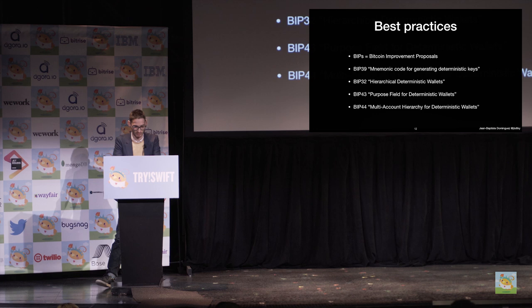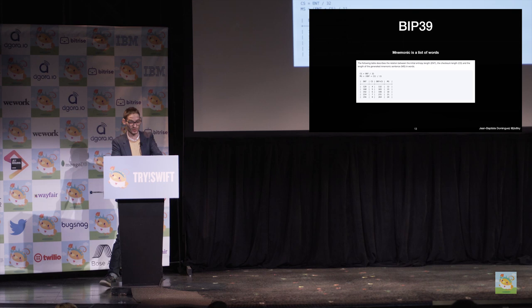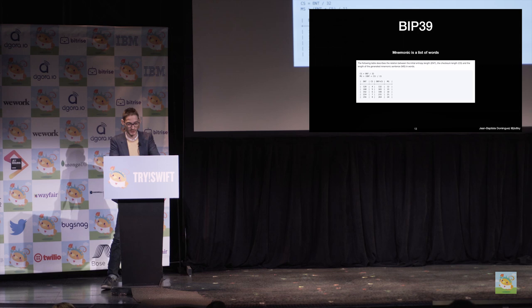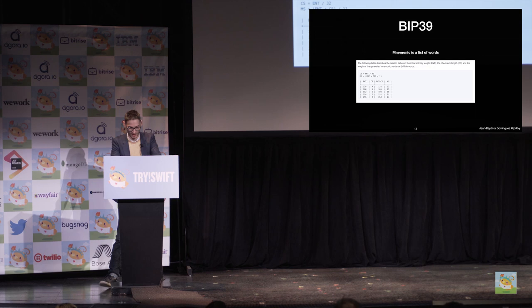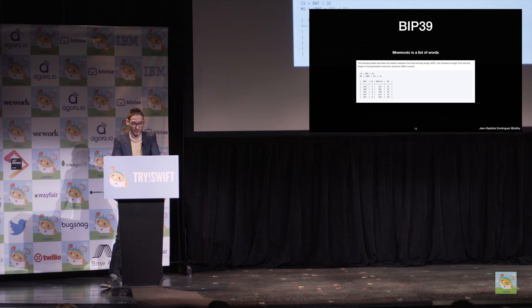BIP39 talks about mnemonics. A mnemonic is a list of words that will allow your user to back up and restore their wallet really easily and safely. There is a list of 2048 words, and it will randomly pick 12 words. These words will be used to generate your seed — your private key. These 12 words need to be stored in a safe place; it's the most important thing to care about. You also need to keep your private key safe. You can increase the amount of words if you would like to improve security by increasing the entropy. I invite you to have a look at the BIP spec for more details.